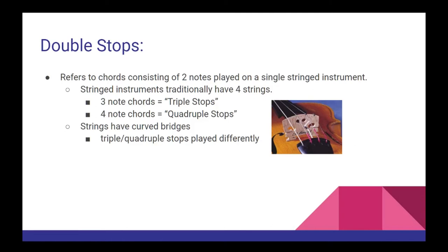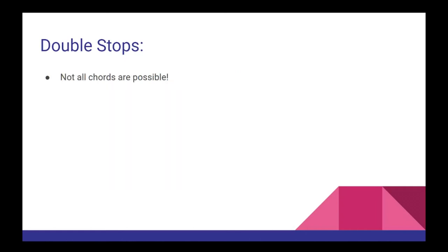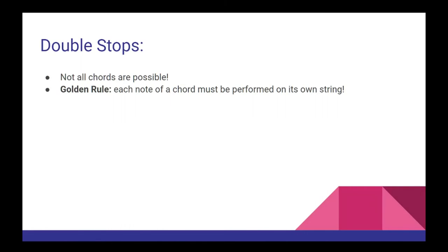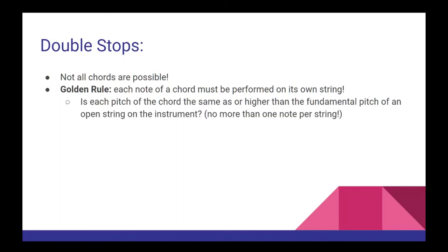It is possible for a triple stop to be played all at once, but this requires a lot of force on the strings, which forces you into using a louder dynamic. Writing these chords is not as simple as just picking two to four notes — although a computer can play any combination in a sound library, this does not mean the chord is possible on a real stringed instrument. In order to make sure each chord is actually playable, every note in the chord must be played by its own string, since no individual string can play more than one note at a time. A quick method for checking is to verify that each note's pitch is the same as or higher than the fundamental pitch of the string assigned to it.